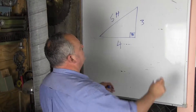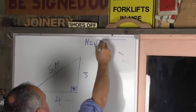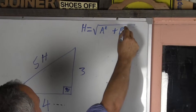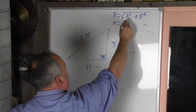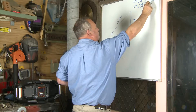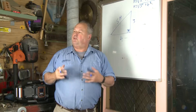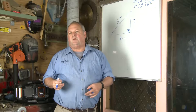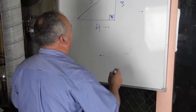So there is a formula, and it goes like this: h equals the square root of a squared plus b squared. We use it as h equals the square root of three squared plus four squared. Now, squared means simply the number multiplied by itself. So three squared is three times three, which is nine. Four squared is four times four, which is 16.